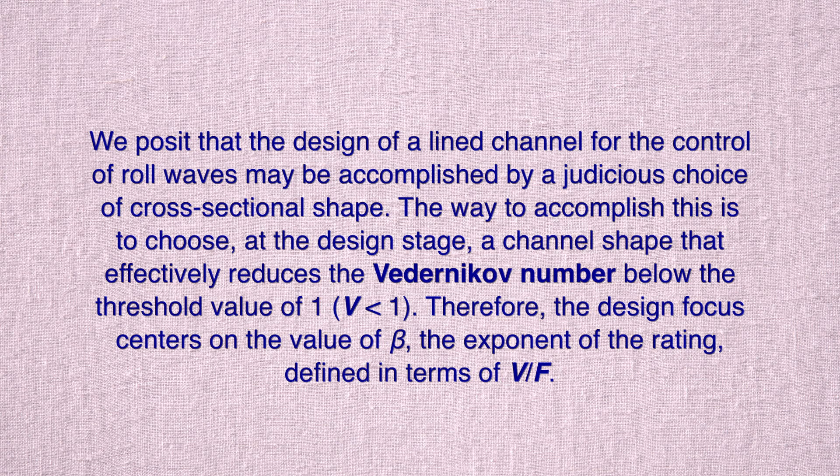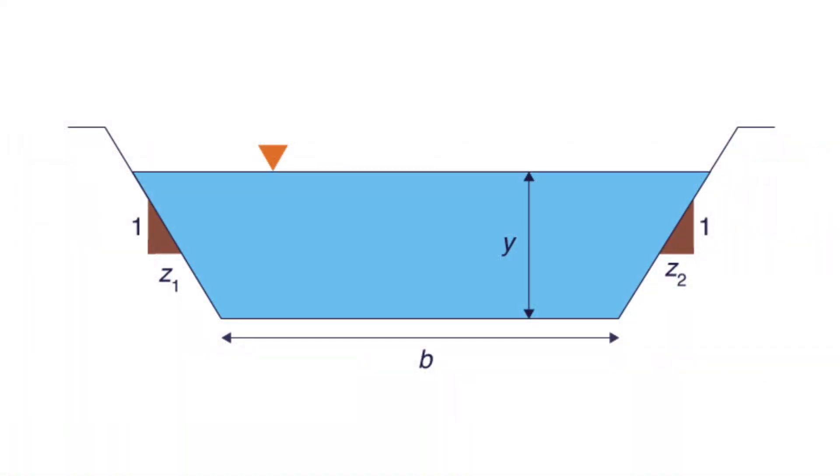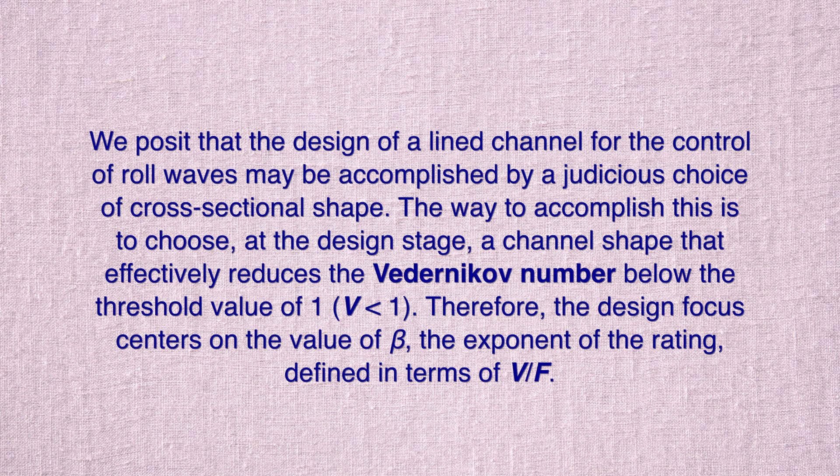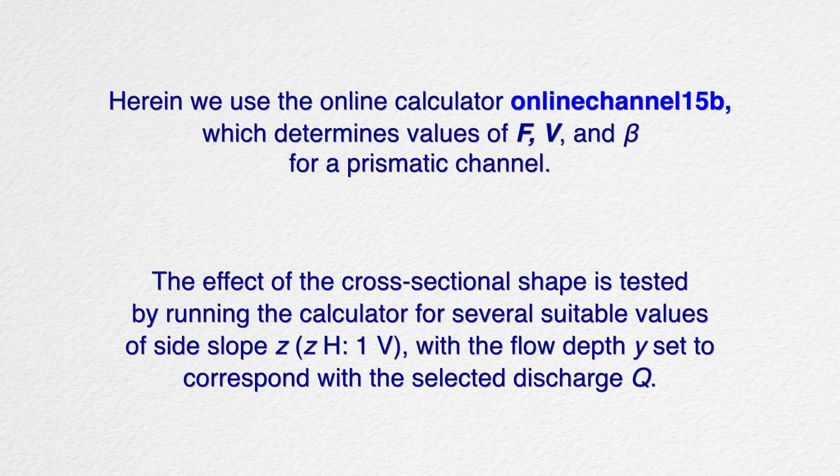We posit that the design of a line channel for the control of roll waves may be accomplished by a judicious choice of cross-sectional shape. The way to accomplish this is to choose, at the design stage, a channel shape that effectively reduces the Bedernikov number below the threshold value of 1. Therefore, the design focus centers on the value of beta, the exponent of the rating, defined in terms of V over F. Herein, we use the online calculator, online channel 15b, which determines values of F, V, and beta for a prismatic channel.